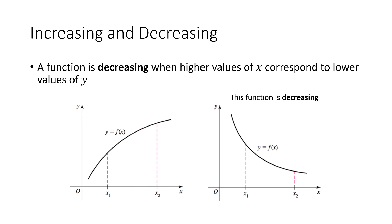Alternatively, a function is decreasing when higher values of x correspond to lower values of y. When I plug in my initial value x1, I get y1. But when I plug in this higher value of x, x2, I get a lower value of y, which I might call y2. And again, as I go from left to right across my function, my y values are going down the whole way. So we call that a decreasing function.